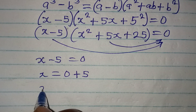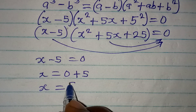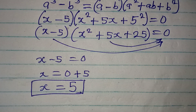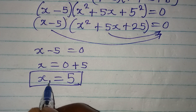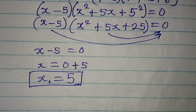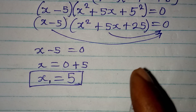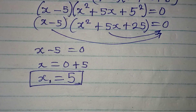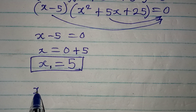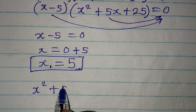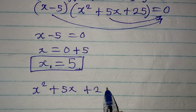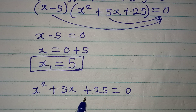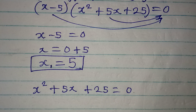Taking x minus 5 equals zero first, meaning that x is equal to 5. This is the first solution to the equation, and we can call this x₁. Now to get the other values of x, we will work with the quadratic expression and equate it to zero, so we have x squared plus 5x plus 25 equals zero.